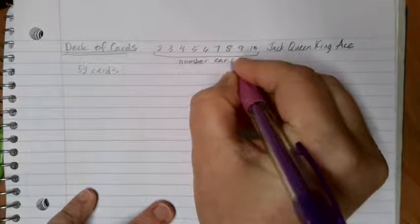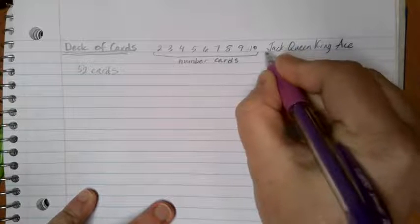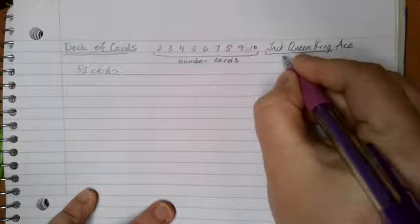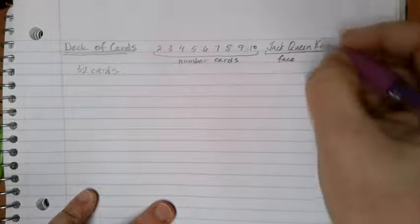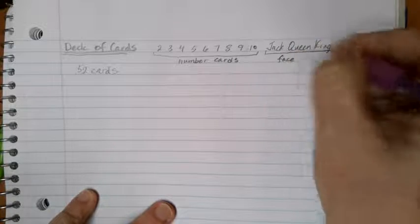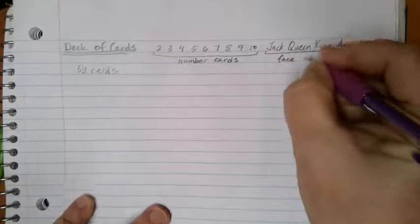Because they have digit numbers on them. Jack, queen, and king are referred to as face cards because these cards have pictures of faces on them for the jack, the queen, and the king.